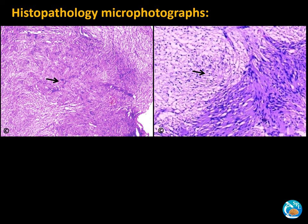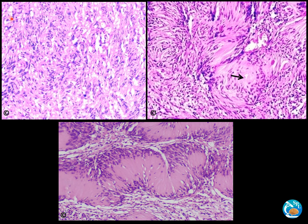Coming to histopathology of case one, the tumor showed two basic architectural patterns in varying proportion: the typical Antoni A areas, which are composed of compact elongated spindle cells with nuclear palisades, and a lesser cellular Antoni B area composed of loose architecture with indistinct cytoplasmic processes and variable lipidization. You can see here a striking nuclear palisade formed from stacked arrays of nuclei with alternating anucleate zones.